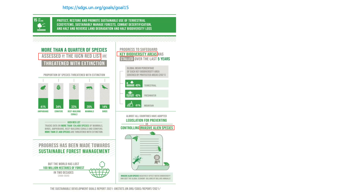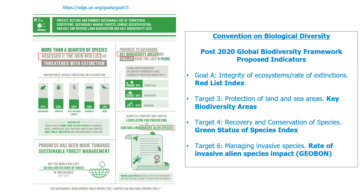If you look at SDG 15, which is focused on maintaining ecosystems and biodiversity, you see it references several features we have discussed: the Red List, key biodiversity areas, and monitoring presence of invasive species as indicators. Several of those same features are also being suggested as indicators for the post-2020 global biodiversity framework being developed by the Convention on Biological Diversity — for example, the Red List, key biodiversity areas, the green status of species, which is a complementary indicator to the Red List assessing the recovery of species populations and measuring conservation success, and an indicator for invasive species.